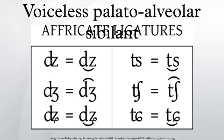Features: its manner of articulation is fricative, which means it is produced by constricting airflow through a narrow channel at the place of articulation, causing turbulence. However, it does not have the grooved tongue and directed airflow, or the high frequencies, of a sibilant.